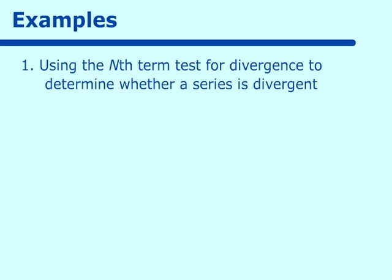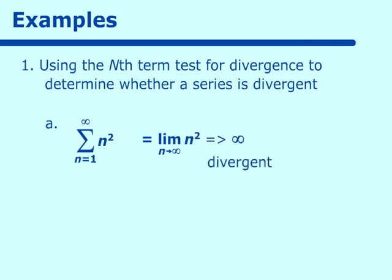Let's look at our first example: the sum when n equals 1 to infinity of n squared. If we take the limit as n approaches infinity of n squared, that surely goes out to infinity. We know this is not a decreasing function either. So this definitely is divergent.